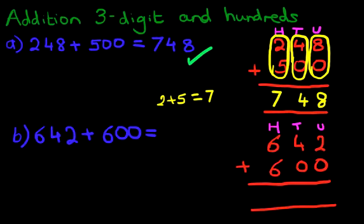So we're adding the numbers 2 and 0. The answer is 2. And now we're adding the tens. The tens column is here. We're adding 4 and 0. Again, 4 plus 0 is 4. Now lastly, we're going to add the hundreds column.